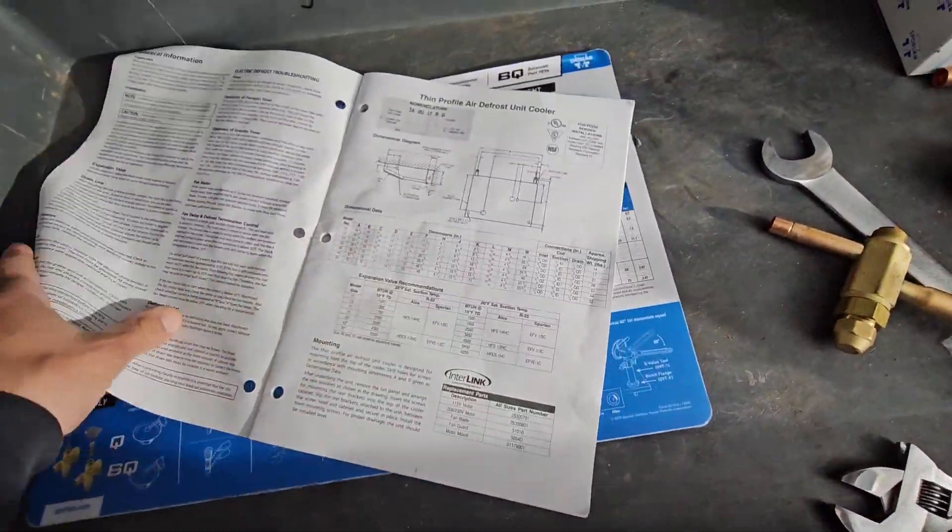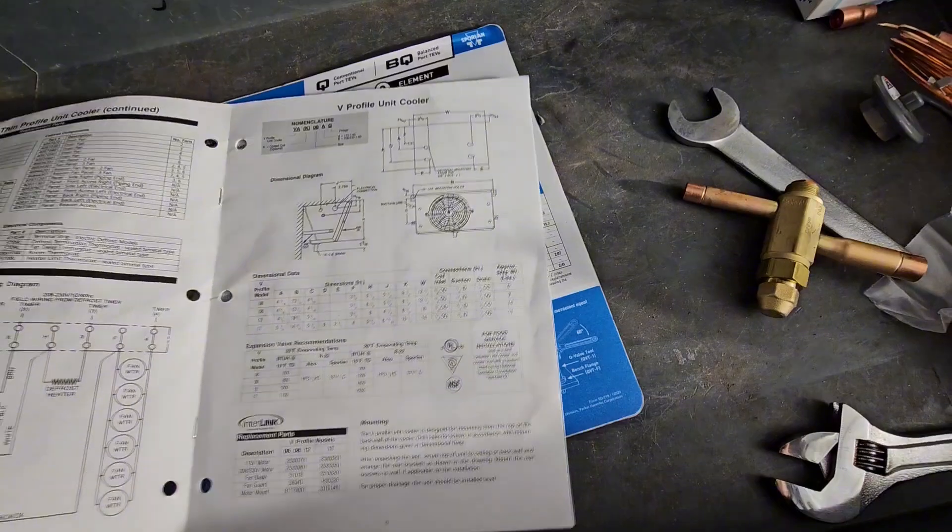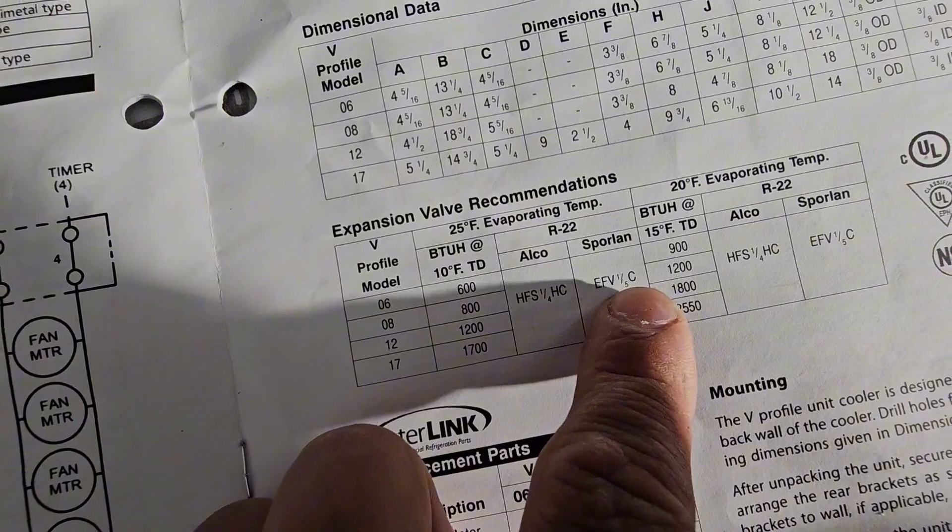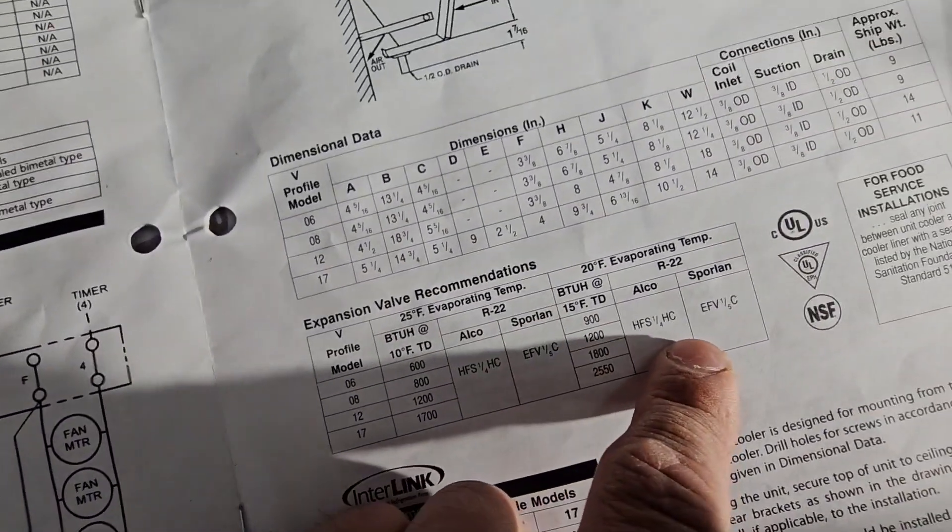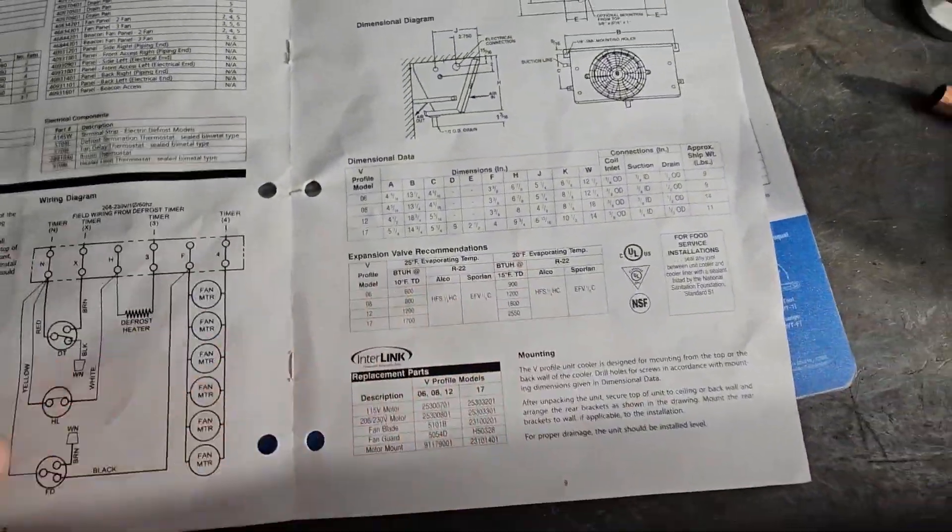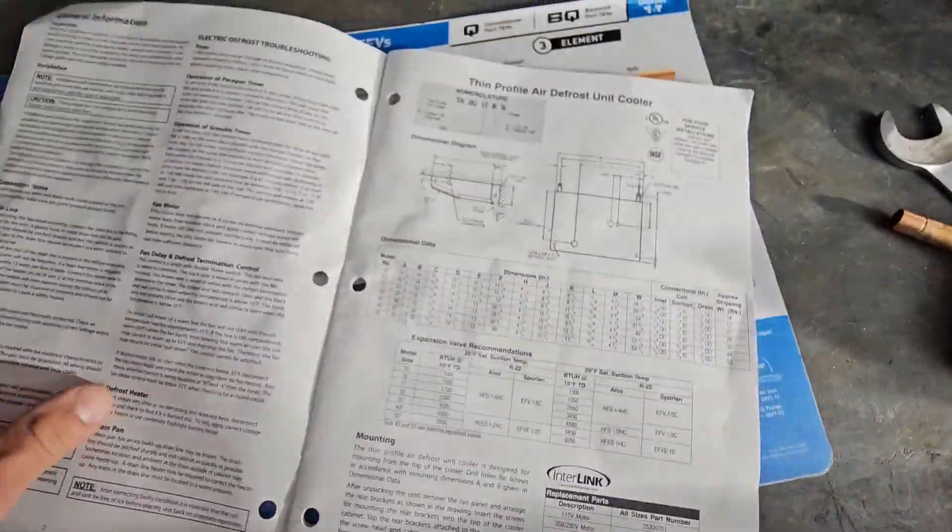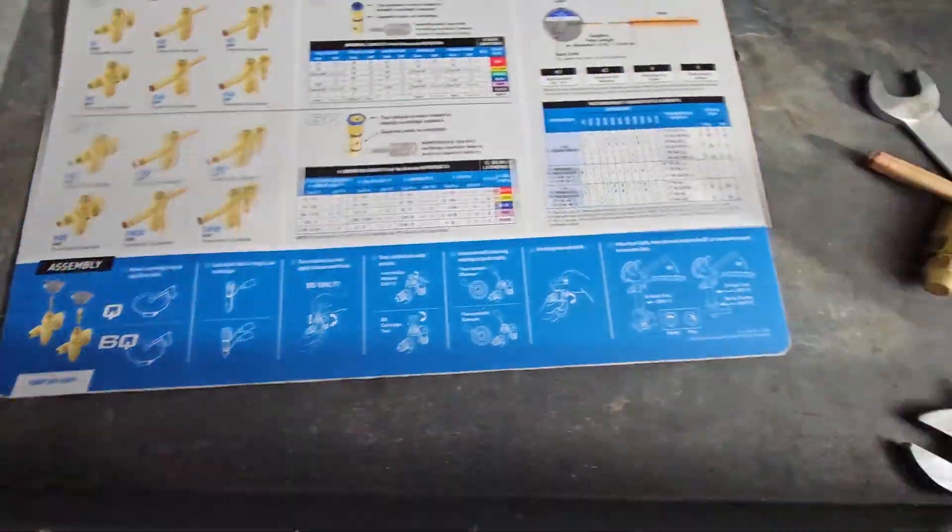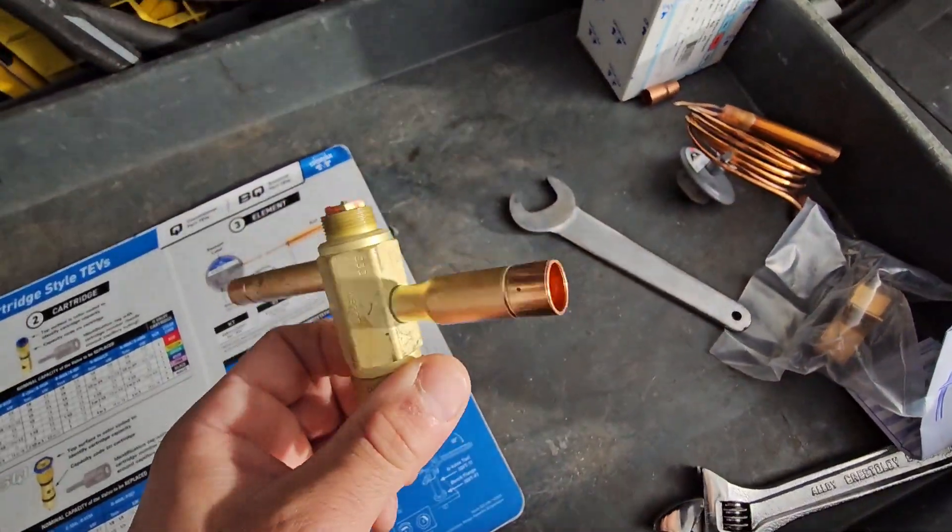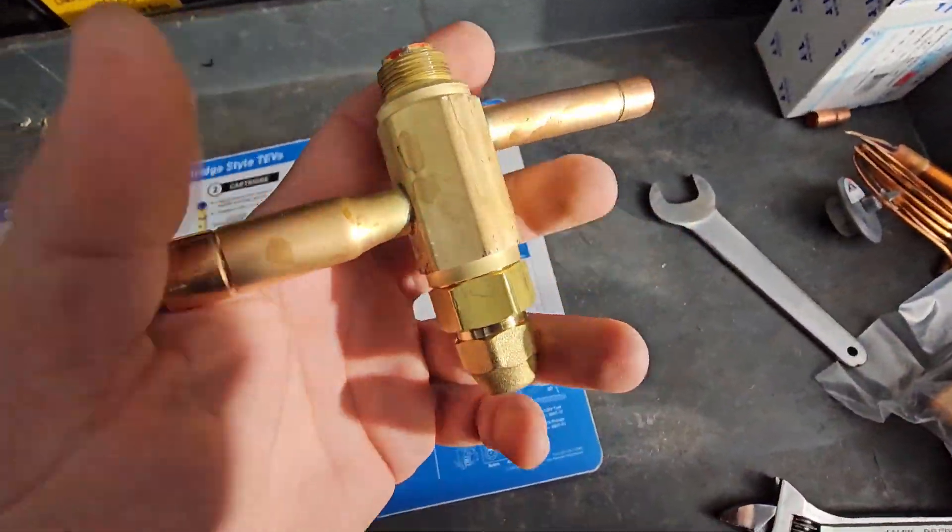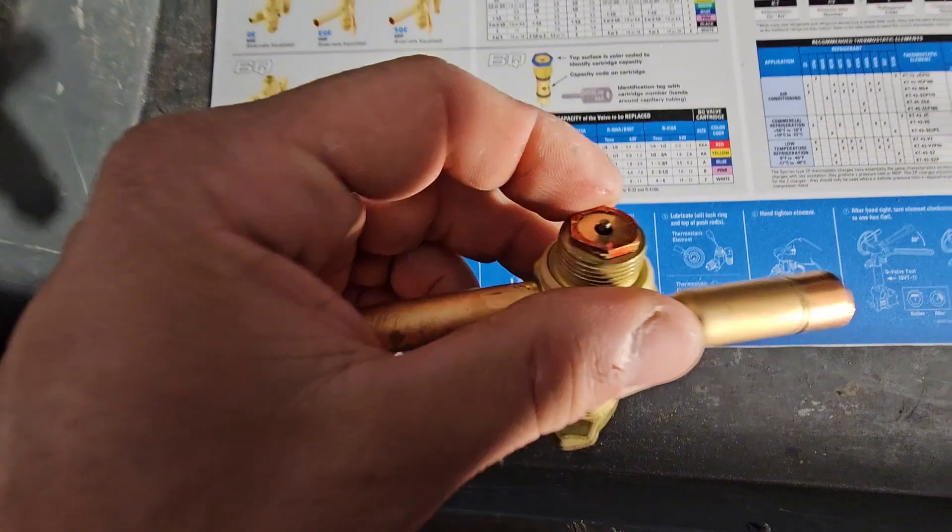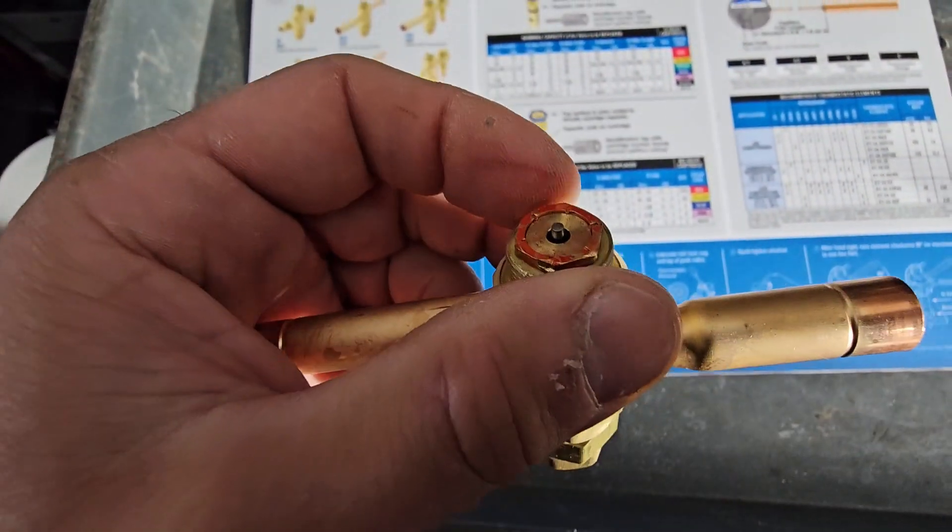Let me just note that you can actually get this exact expansion valve that they mentioned in here, so like you don't have to build an expansion valve, but I just happen to have... Yeah, see, like you can use a EFV15C Sporlan. So if you go to your local refrigeration supplier, they can supply you with that, but you could also make it yourself.